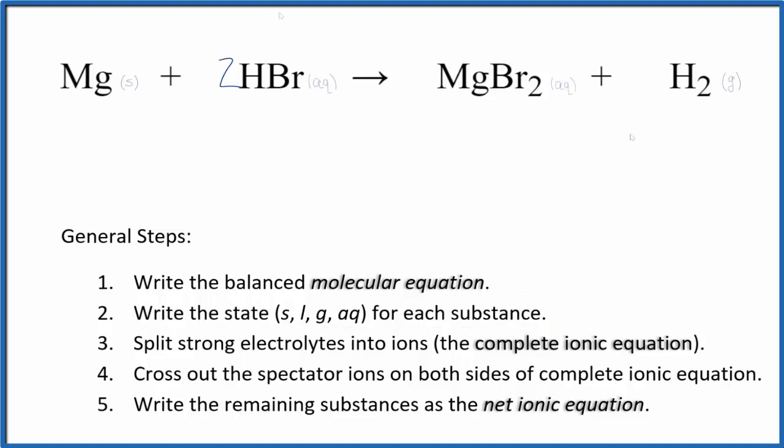Now we can write the state for each substance. That looked like this. Magnesium, that's a metal, so it's solid. Hydrobromic acid is considered a strong acid, so that'll be aqueous. When we have the bromide ion here, with magnesium bromide, that's going to be aqueous most of the time. And then hydrogen, that's a gas.